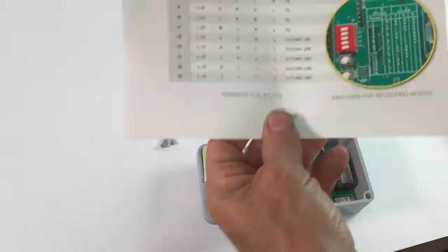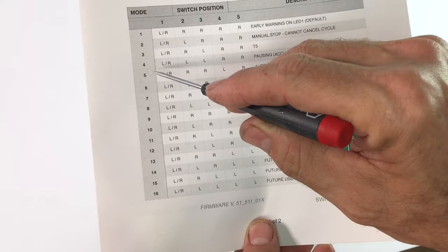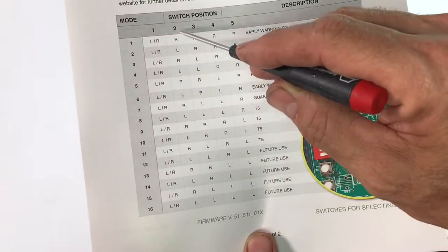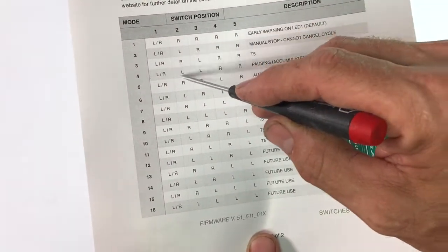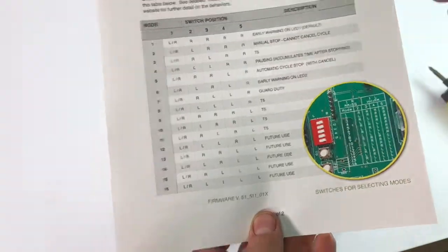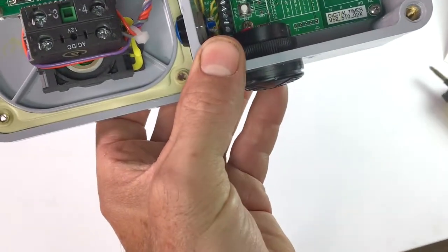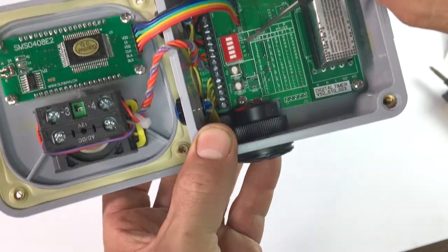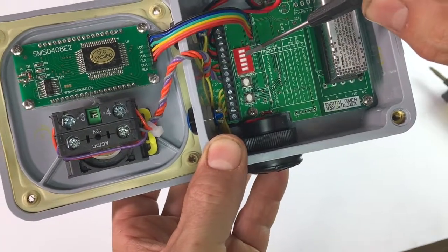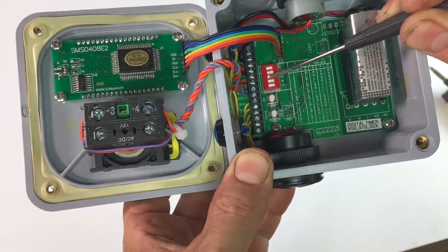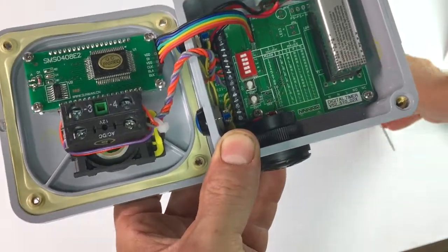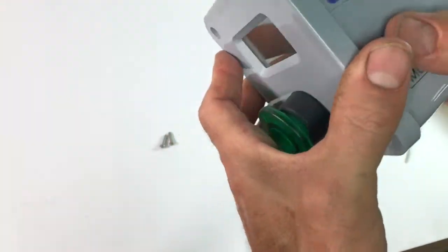Alright, so we're going to set it to mode four, which is switches two through five will be left, left, right, right. So here's the dip switches, two through five and it's going to be left, left, right, right. So now we're in mode four, I'm just going to put it together.